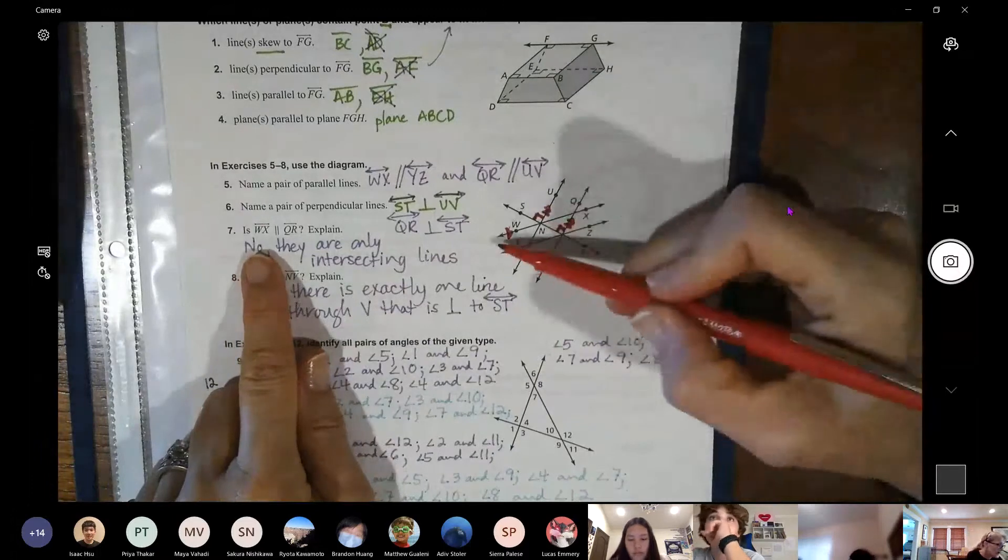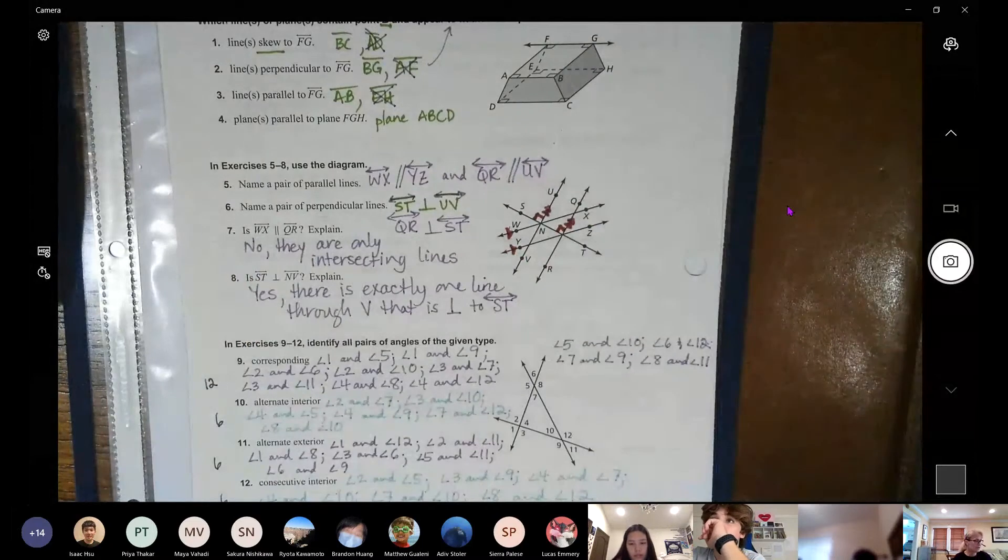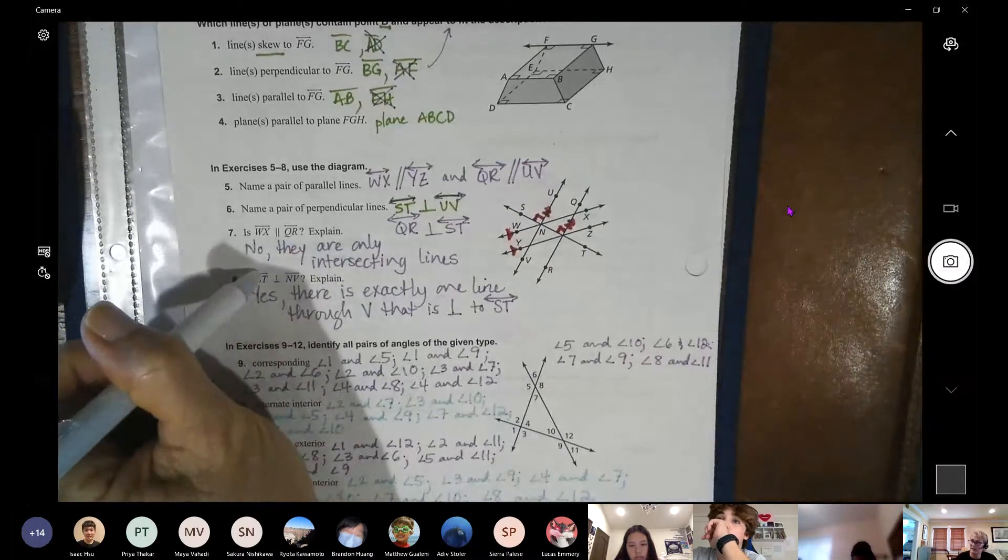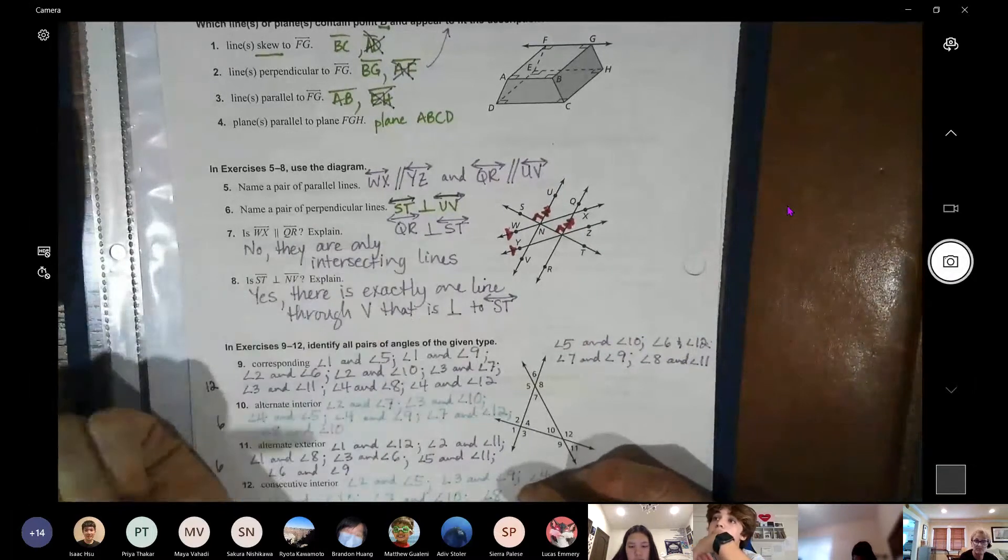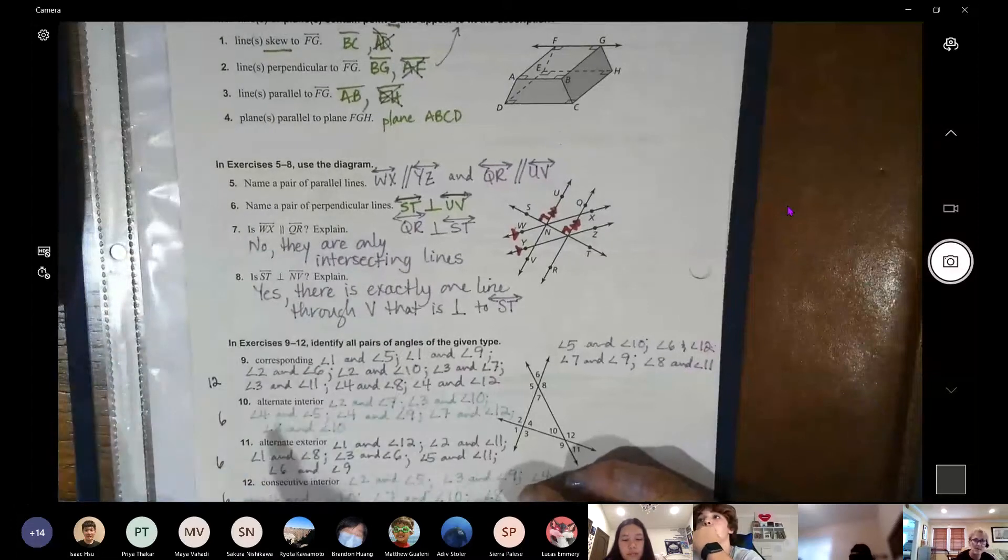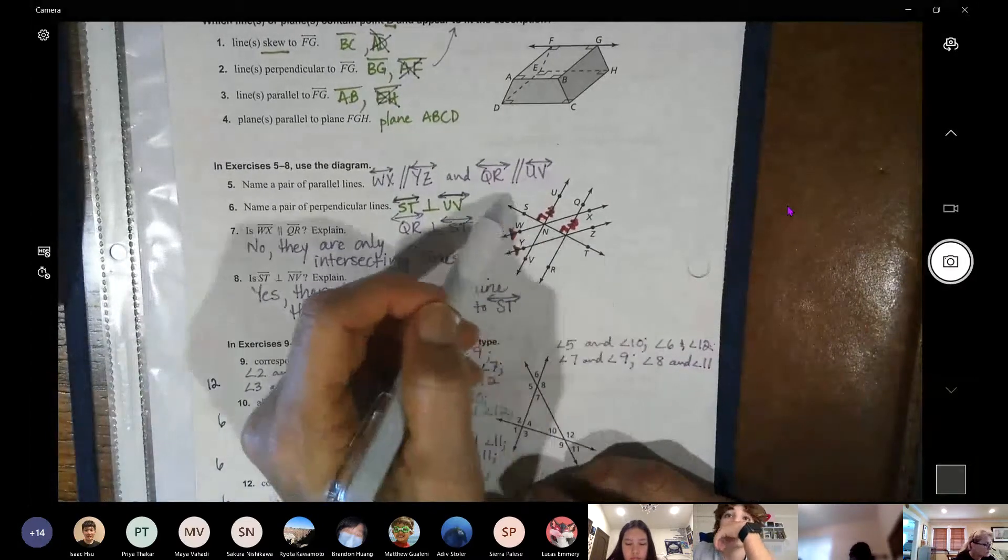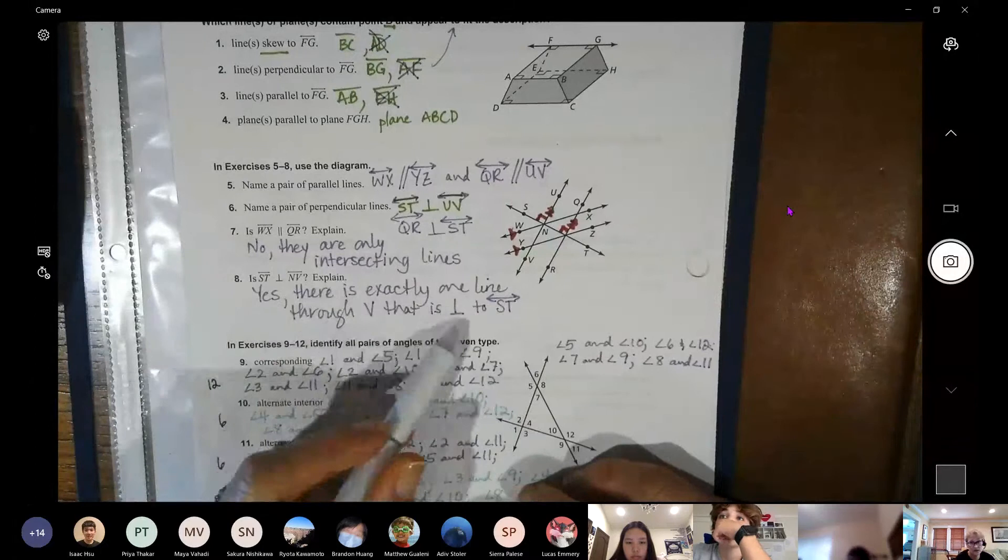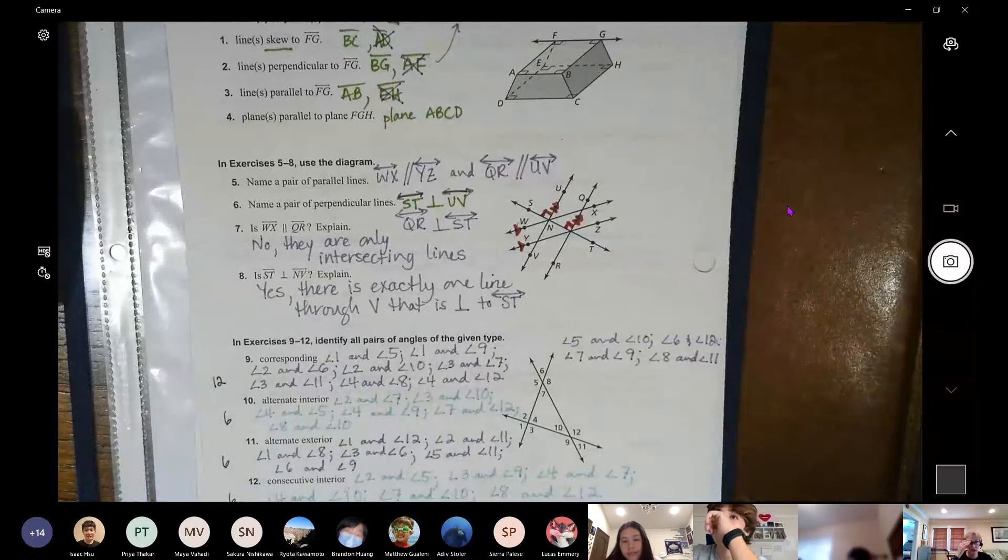And then it asks, is WX parallel to QR? No, of course not. They go in different directions. If it says explain, you should have some other type of blurb here. Why not? No, they're not because they are intersecting and parallel lines never intersect. Eight is ST perpendicular to NV. So ST and V, yes. And we know that there is exactly one line through V that is perpendicular. That was our perpendicular postulate from yesterday.